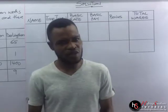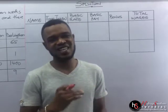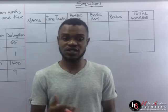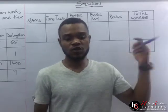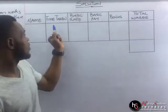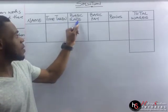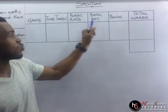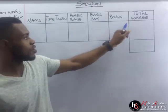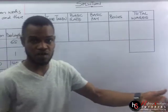Remember, this table will make it easy for us to understand every form of question and how to derive these steps. To derive the basic pay, we use the time taken multiplied by the basic rate. And the basic pay plus the bonus gives us the total wages, which is also the gross pay.